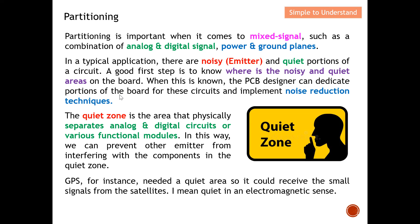Once the noisy and quiet areas are identified, the PCB design can dedicate portions of the board for each circuit and implement noise reduction techniques to minimize radiation, conduction, and coupling. The quiet zone is the area that physically separates analog and digital signals or various functional modules. In this way we can prevent emitters from interfering with components in the quiet zone — keeping emitters as far away as possible from those that are very vulnerable to interference.